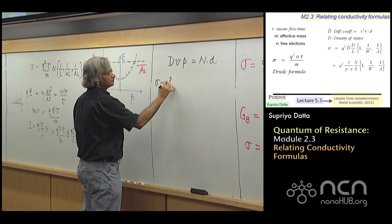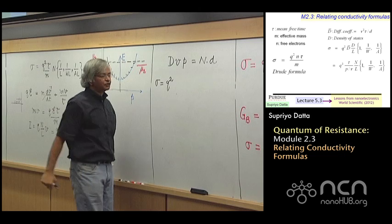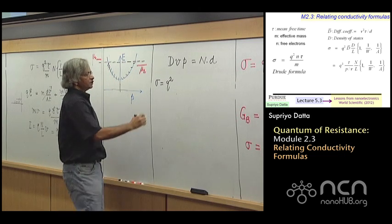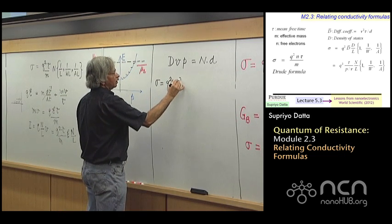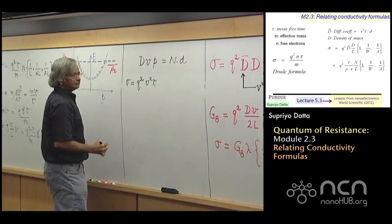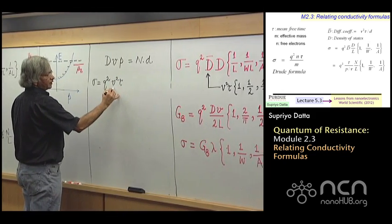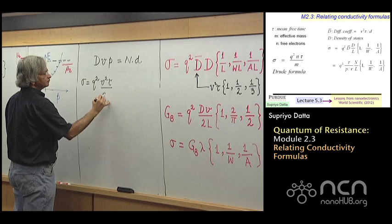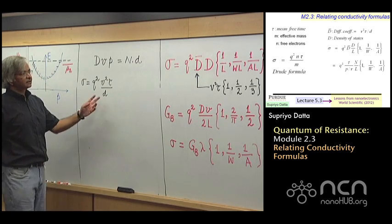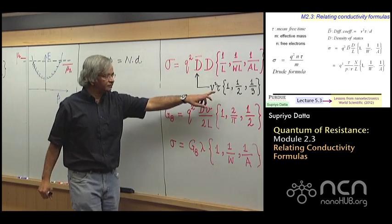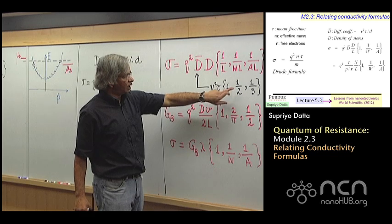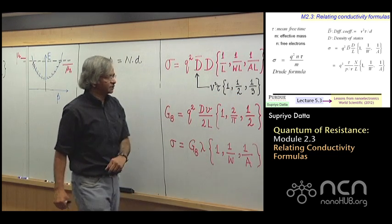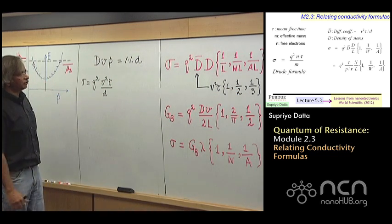So what you can see is, the expression for conductivity I have there, I could write in the following way, q square. And then there is the diffusion coefficient, which is v square tau divided by d, the number of dimensions. As you have seen, one dimension is 1, two dimensions is half, three dimensions is 1 over 3, v square tau over d.